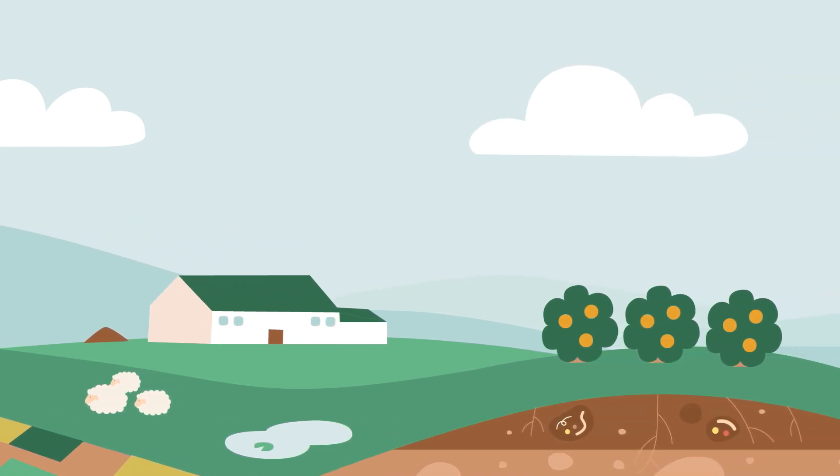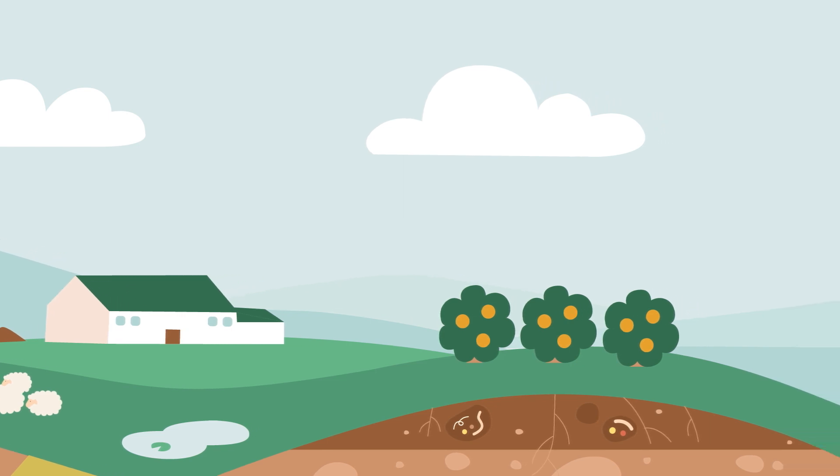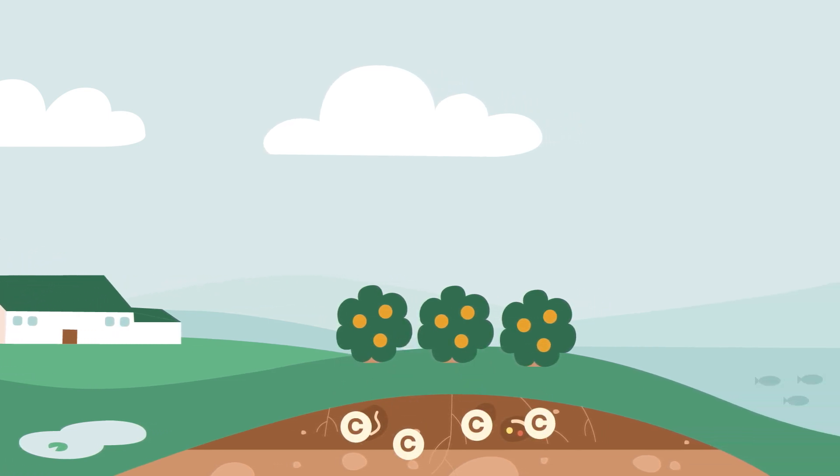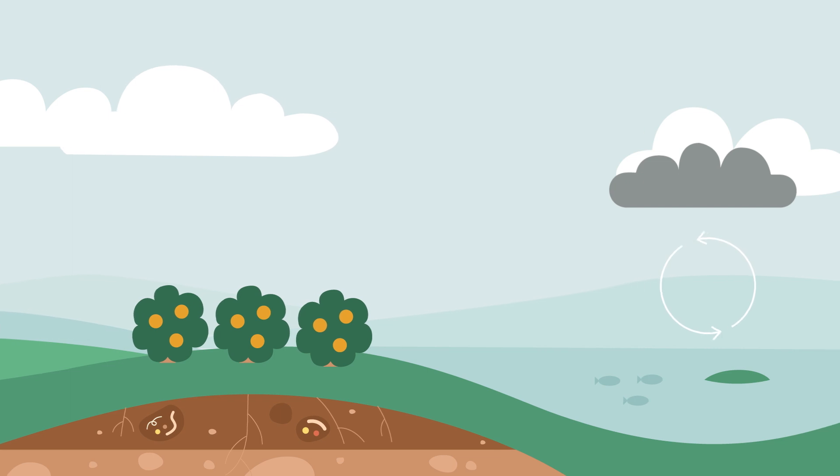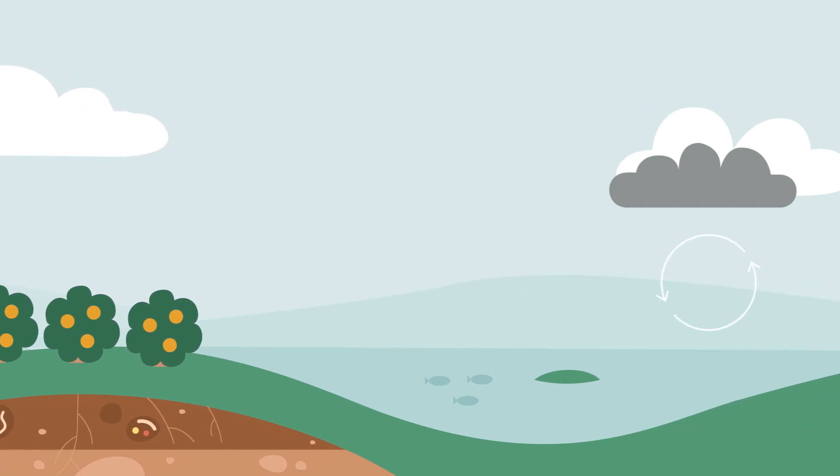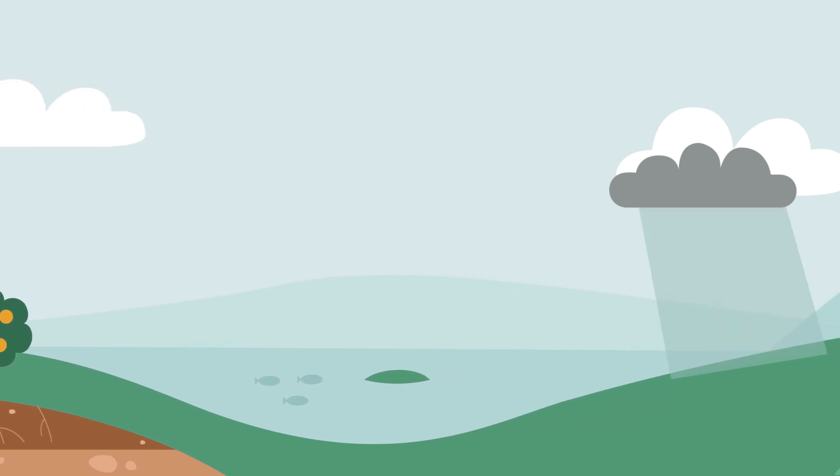Biodiversity returns, drawn by the absence of synthetic chemicals and the presence of life. Carbon is stored underground, easing the burden on oceans and the atmosphere. Water cycles restore, improving drought resilience and reducing erosion.